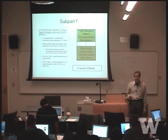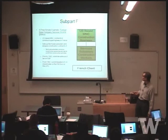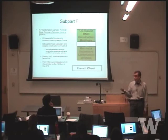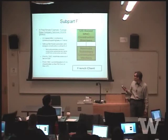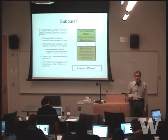The third category is foreign base company services income. A typical example: a Bermuda subsidiary is used, and there's a French client that wants a superhighway constructed in France. Services are performed outside the country of the CFC, which is Bermuda, and they're performed on behalf of a related person — in this case, the parent company. That's a typical example of foreign base company services income.